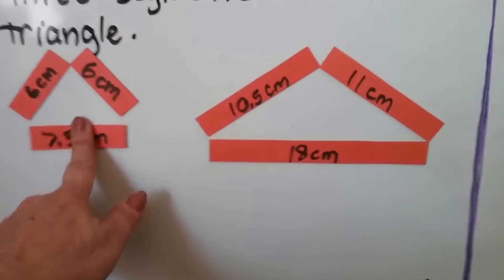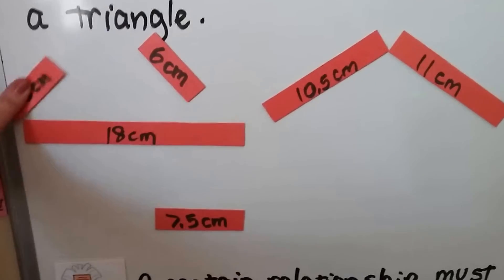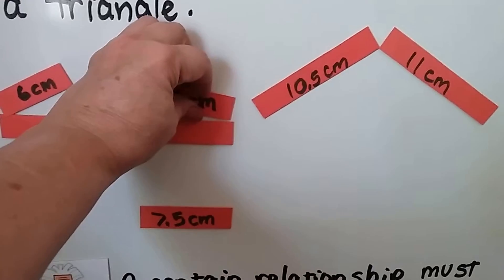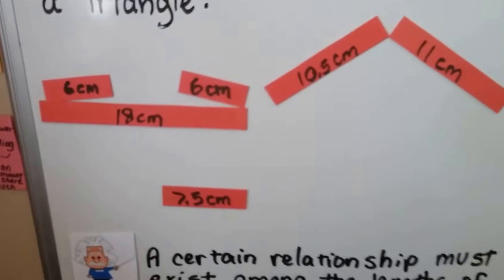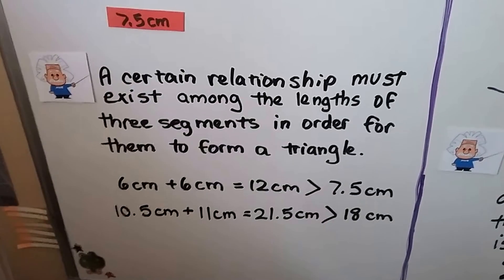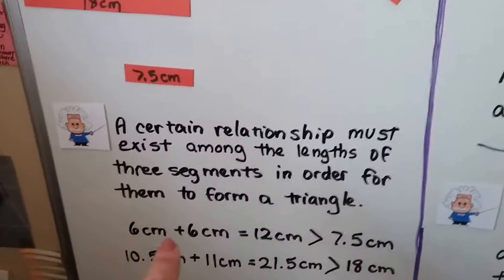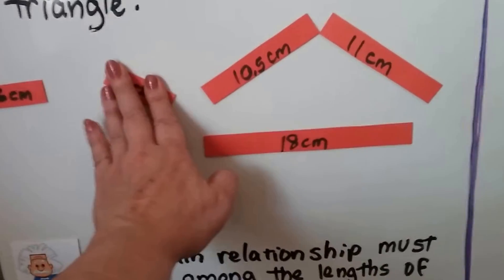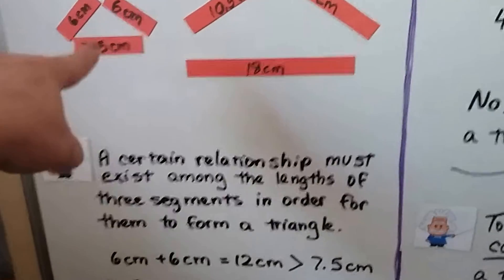But what happens if I take this one away and try putting the 18-centimeter in its place? This six-centimeter one and this six-centimeter one are not gonna meet each other. And no matter how low I put them to make the angle smaller, there's always gonna be a gap. There's a reason for that. There's a certain relationship that must exist among the lengths of three segments in order for them to be a triangle. We had the six-centimeter plus six-centimeter, that made 12 centimeters, and 12 centimeters is greater than 7.5 centimeters. That's why that worked.